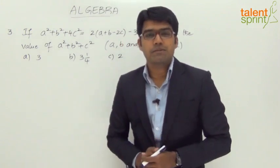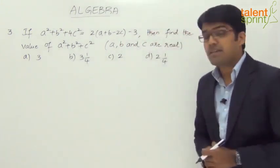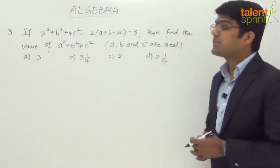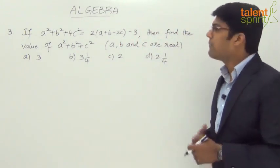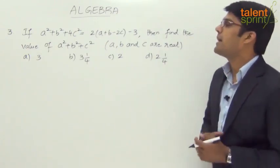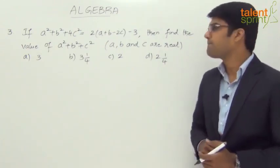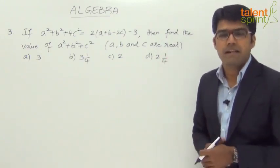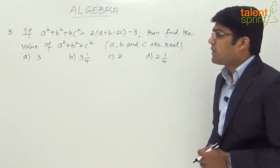Let us now take question number 3. It says if a² + b² + 4c² = 2(a + b - 2c) - 3, then find the value of a² + b² + c², where a, b, and c are real as specified in the question.